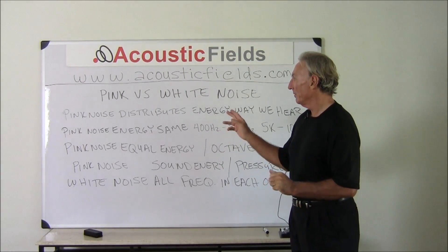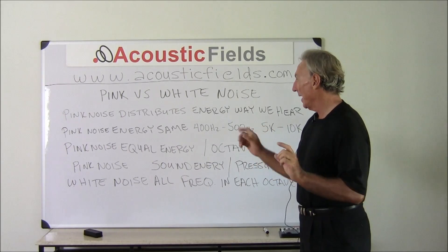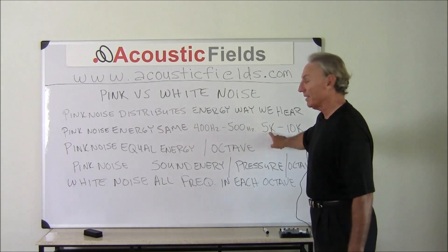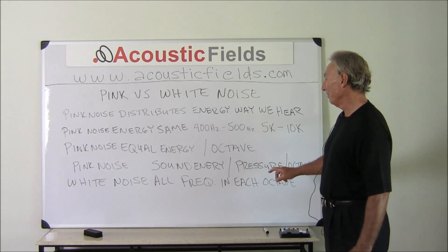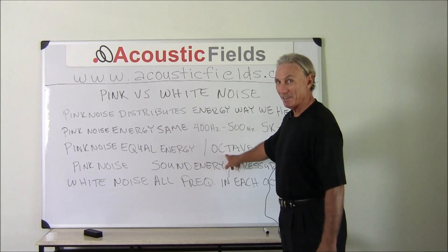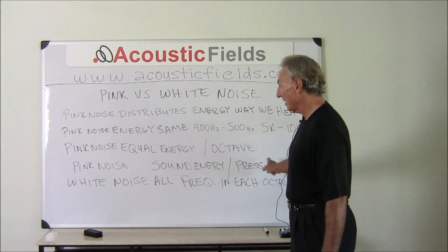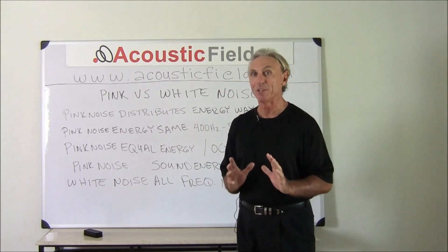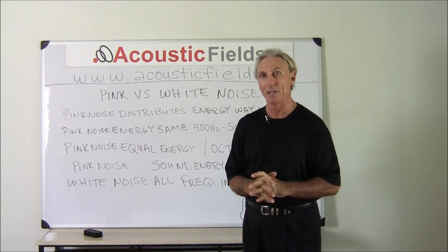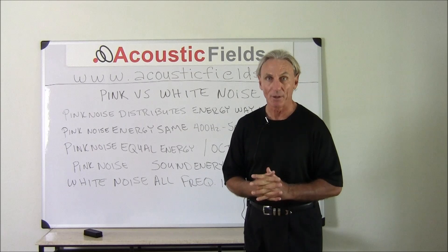For further clarification: pink noise distributes energy the way we hear, in octave bands. The energy in pink noise is the same from 400 to 500 Hz as it is from 5k to 10k — pink noise is equal energy per octave. It's all about pressure and energy in each octave. White noise is all about the individual frequencies in each octave. Hopefully you can see the difference here, and I'm really hopeful this will clarify some of the questions I've been getting.